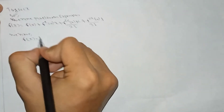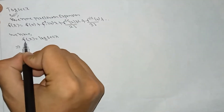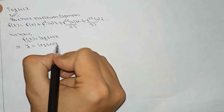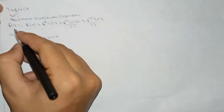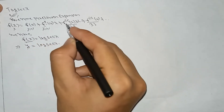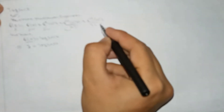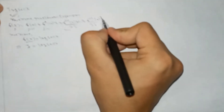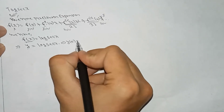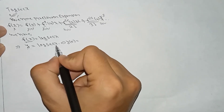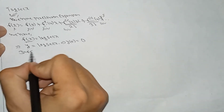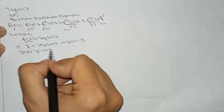We have f(x) = log(sec x). Suppose f(x) = y. Then the terms become y(0), y1(0), y2(0), y3(0), and so on. If we put x = 0: sec(0) = 1, and log(1) = 0, so y(0) = 0.